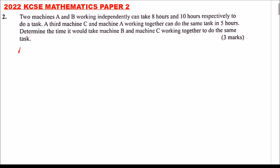We can start by saying let's have machine A, machine B, and machine C. Machine A can do the task in 8 hours, so in 1 hour it will do 1/8 of the job. Machine B can do the same task in 10 hours, so in 1 hour it will do 1/10 of the work.